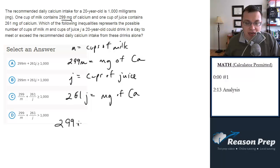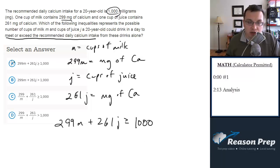Well it's going to be 299M plus 261J, and we want to know when will this meet or exceed the recommended daily calcium intake which is 1,000 mg. So when is this, in other words, greater than or equal to—meet which is the equal to, or exceed which is the greater than—1,000 mg. So we look at the choices and that is choice A.